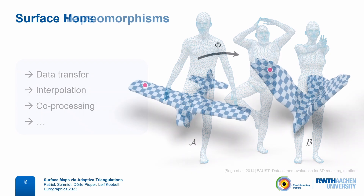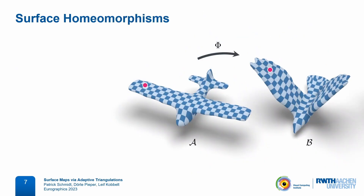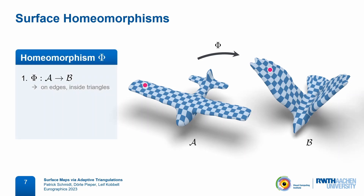A particularly high-quality class of maps that we are interested in are surface homeomorphisms. Between a pair of triangle meshes, these are maps that are defined at every surface point — so not only at the vertices, but also everywhere on edges and inside triangles.